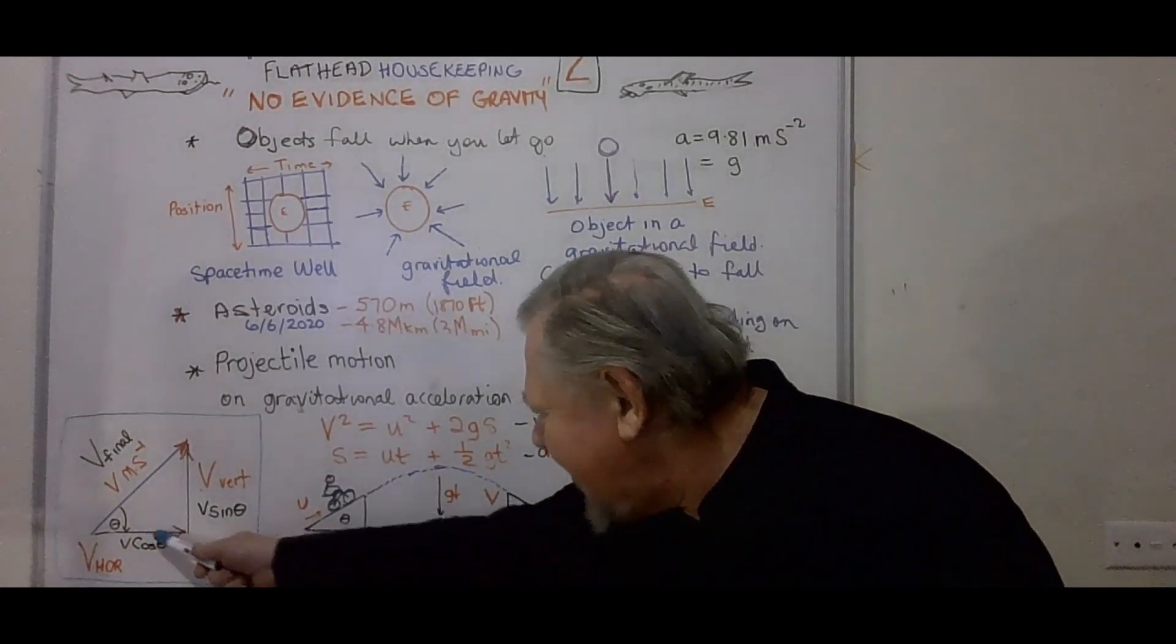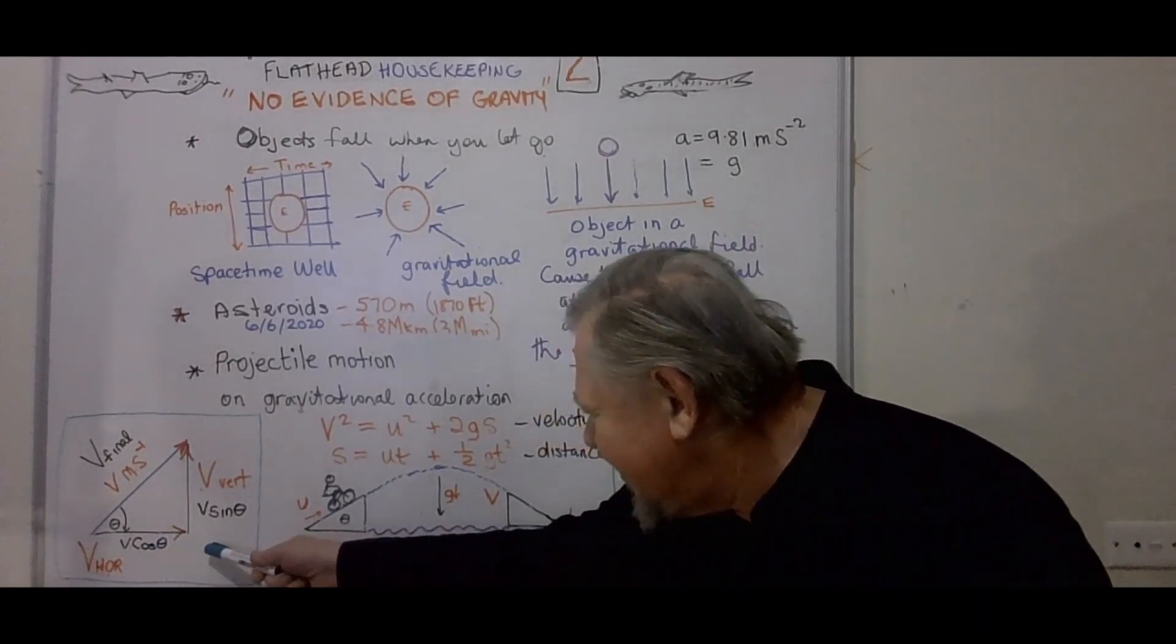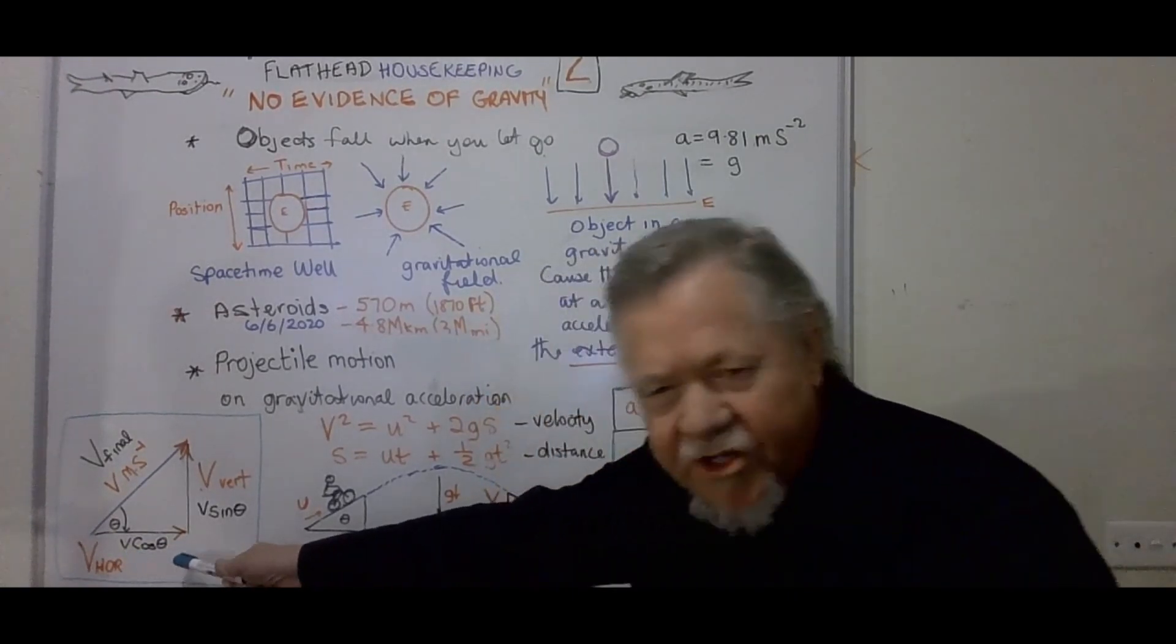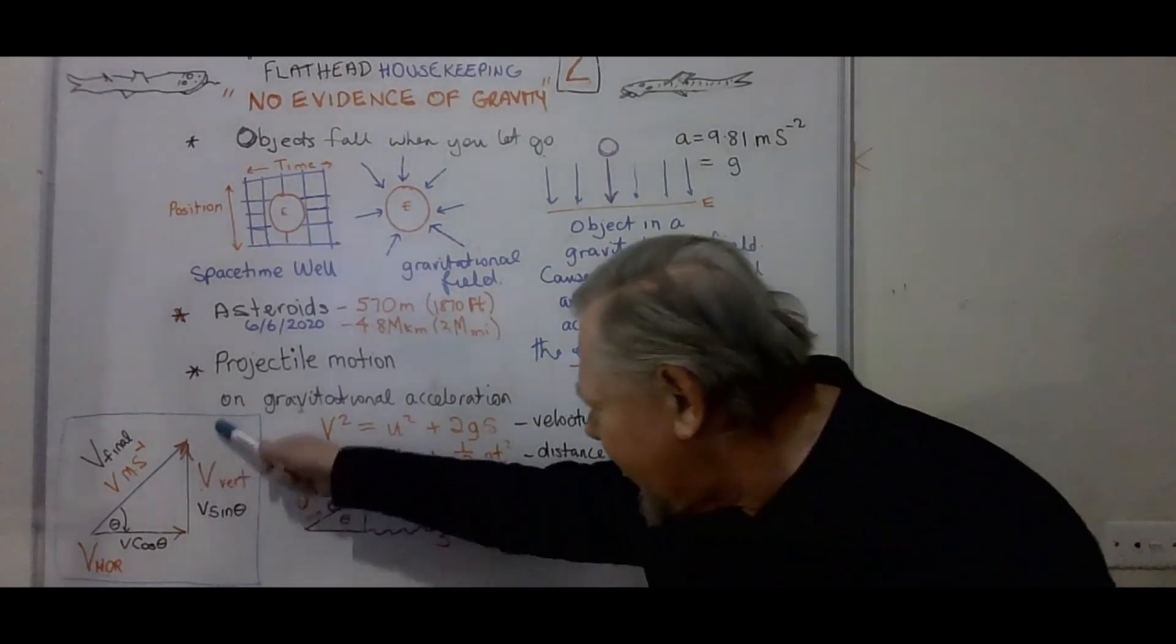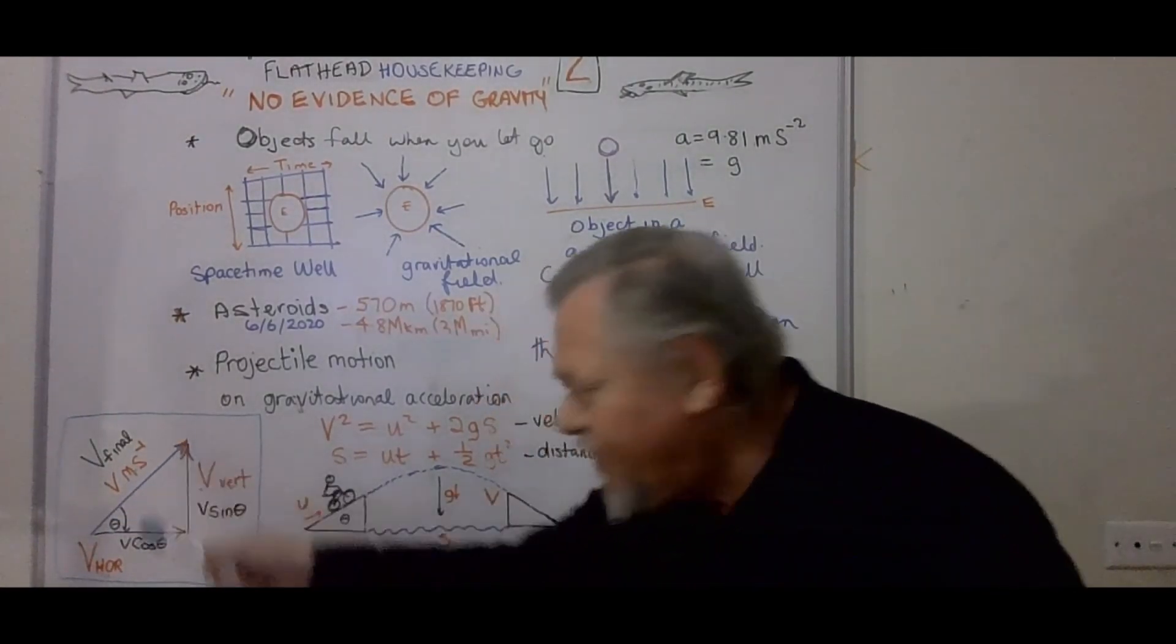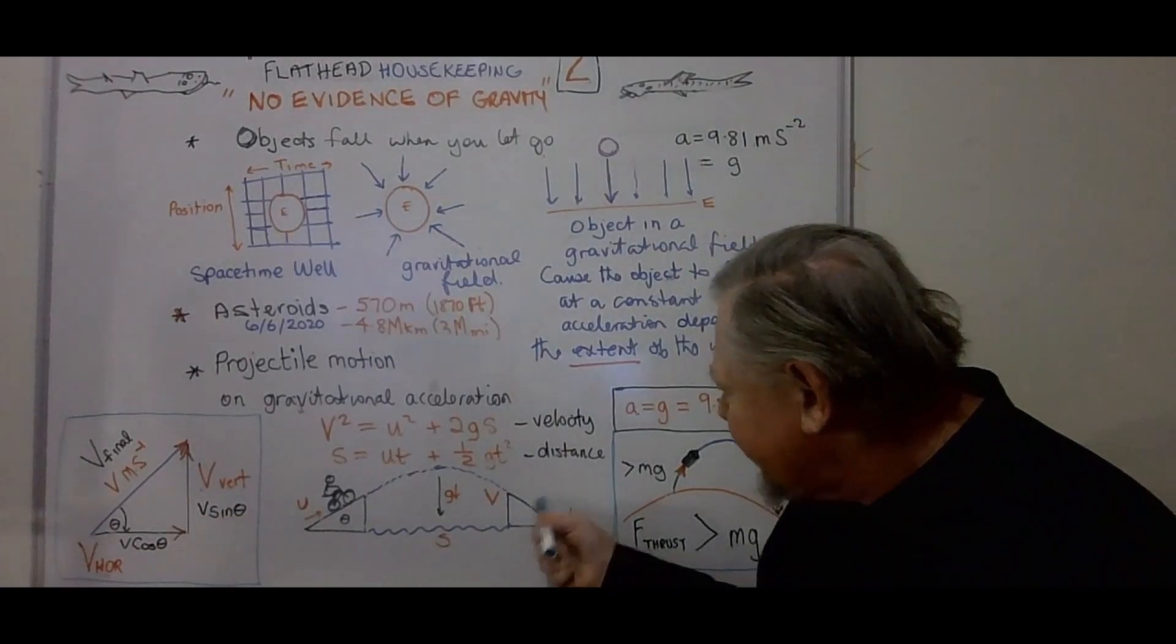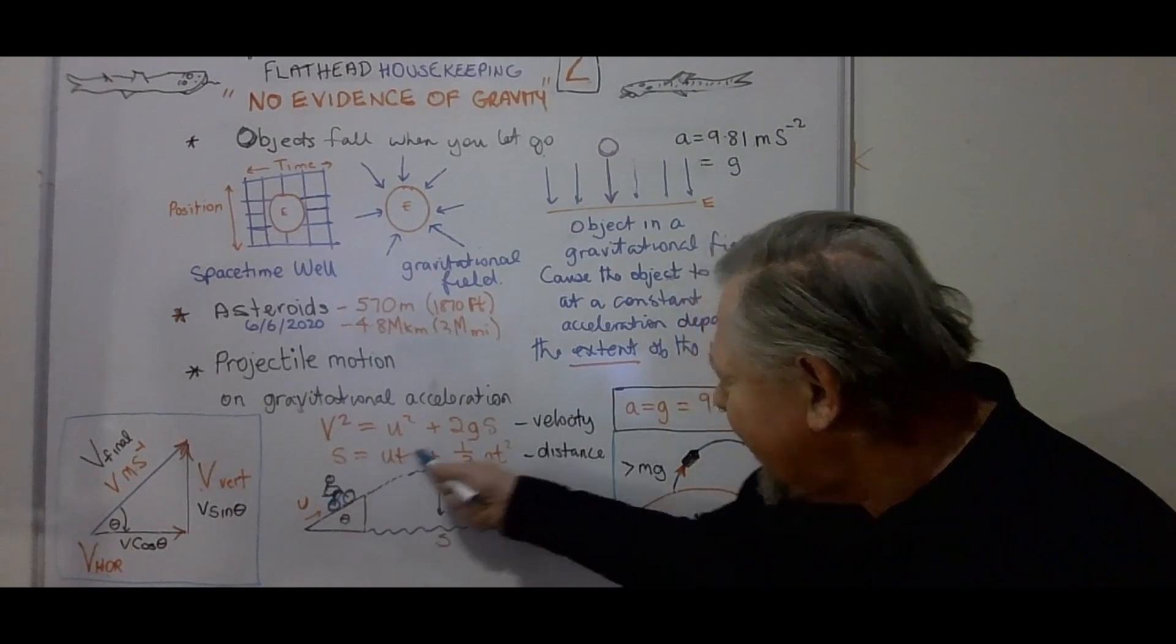We've got two vectors for projectile motion. One, horizontal, calculated with velocity times the cos theta. And a vertical one, which is velocity times sine theta. Those two vectors together give us the final velocity, which is the velocity at this end. Let's say this daredevil over here is going to clear this river.